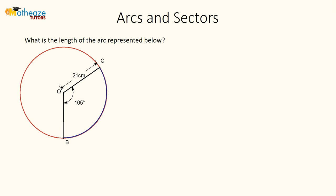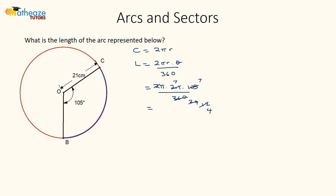Let's apply the same approach to another example. The arc length is 2πr × (θ/360), giving us 2π × 21 × (105/360). Simplifying: 21/360 reduces by dividing through — 105 and 360 share a factor of 15, giving 7 and 24; further dividing gives us 7 × 7 × π/4, which equals 49π/4 centimeters.